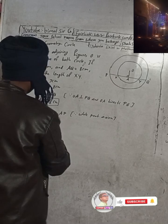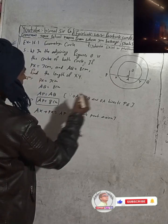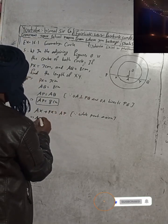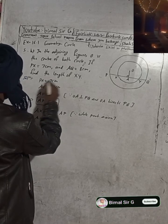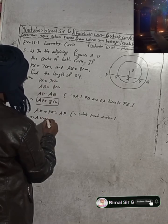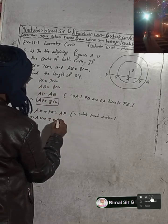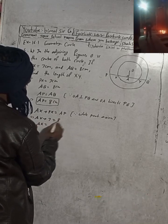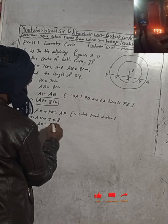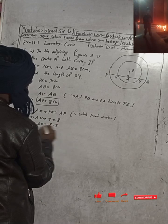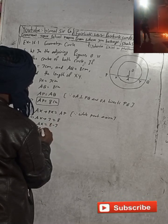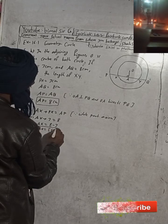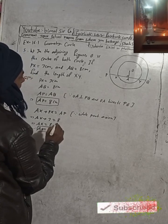AX plus PX equals AP. PX is 3 and AP is 8cm. Therefore AX equals 8 minus 3, so AX equals 5cm.